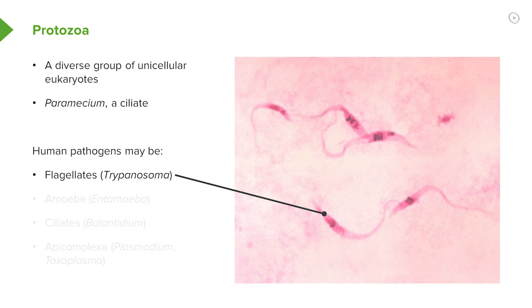The paramecium has tiny hair-like extrusions around its surface. You may know paramecium because when you were in school you may have looked at a drop of pond water and seen these very tiny protozoans swimming around. It's often studied in schools because it's safe.